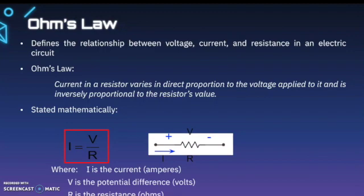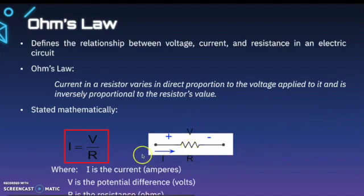Now let's take a look at Ohm's law. Ohm's law defines the relationship between voltage, current, and resistance in an electric circuit. Ohm's law states that current in a resistor varies in direct proportion to the voltage applied to it, and is inversely proportional to the resistor's value. Mathematically, we can state that as I equals V over R, or in a more schematic way, V over a resistor with current flowing positive to negative. Where I is the current in amperes, V is the potential difference in volts, and R is the resistance in ohms.